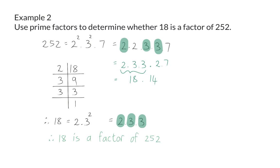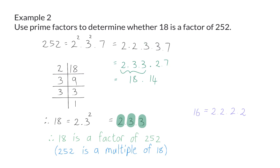Similarly, the question could have been asked in the opposite direction, and we could have said that 252 is a multiple of 18. Let's see whether 16 is a factor of 252. 16 is written as 2 to the power of 4 in terms of prime numbers, which is 2 times 2 times 2 times 2. If we now want to form 16 using the prime factors of 252, we only have two 2s available. That means that 16 is not a factor of 252, because we cannot form the value 16 using only the prime factors of 252.